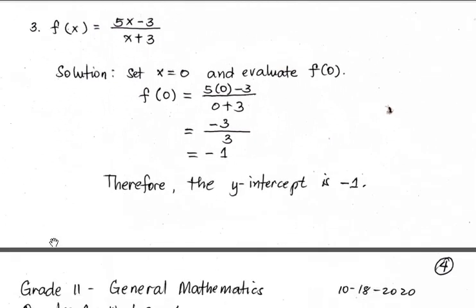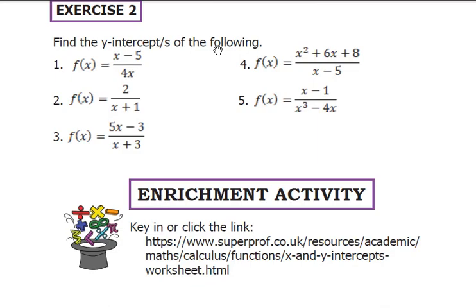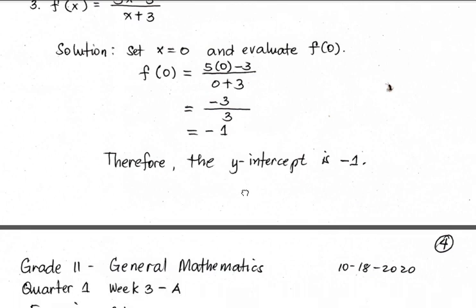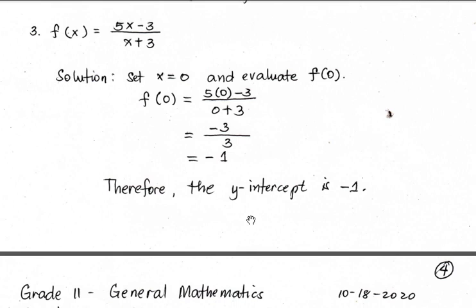Number 3: f(x) equals (5x minus 3) all over (x plus 3). We have f(0) equals (5 times 0 minus 3) all over (0 plus 3), which is negative 3 over 3, or negative 1. So the y-intercept is negative 1, meaning the graph of the function will touch the y-axis at the point (0, negative 1).